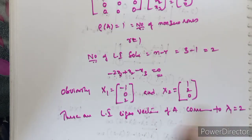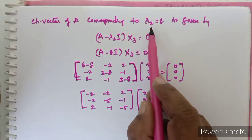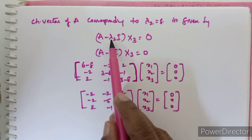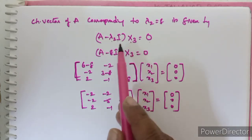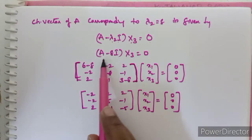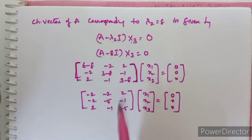For the characteristic root λ₁ = 2 we obtained two linearly independent eigenvectors. Now we find the characteristic vector of A corresponding to λ₂ = 8, given by the non-zero solutions of (A - 8I)X₃ = 0. We call this vector X₃.